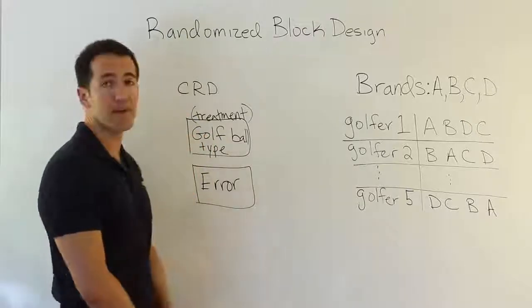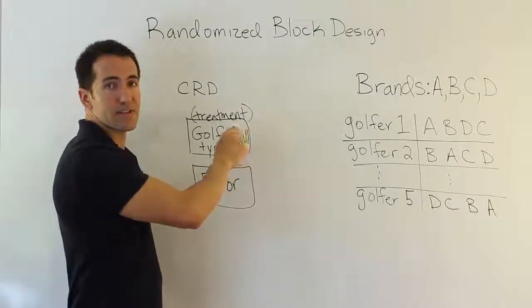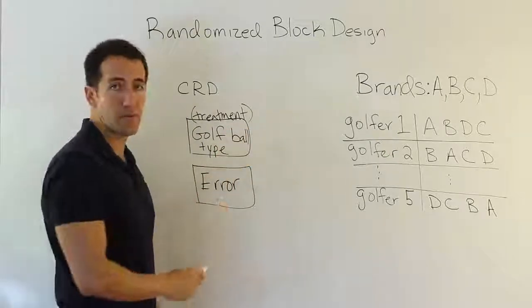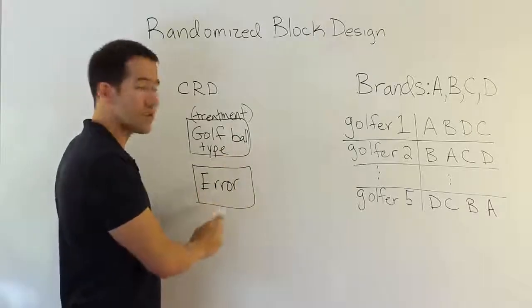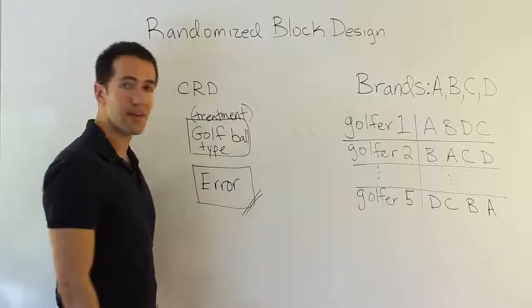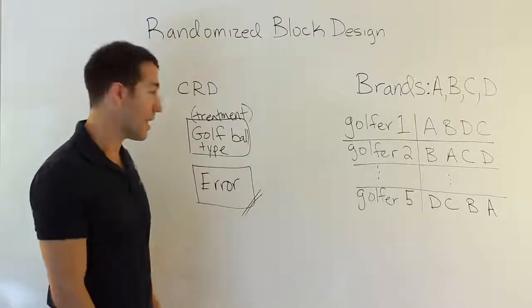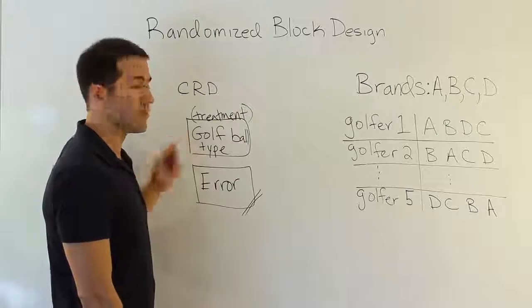Then we're going to make a comparison. We're going to see when we isolate the treatment effect and compare it to the error, we want to see if this effect is relatively large against this effect. Think about it. If you put too much stuff in the error, like the differences between the golfers, you're going to have a hard time being able to show the golf balls are different.